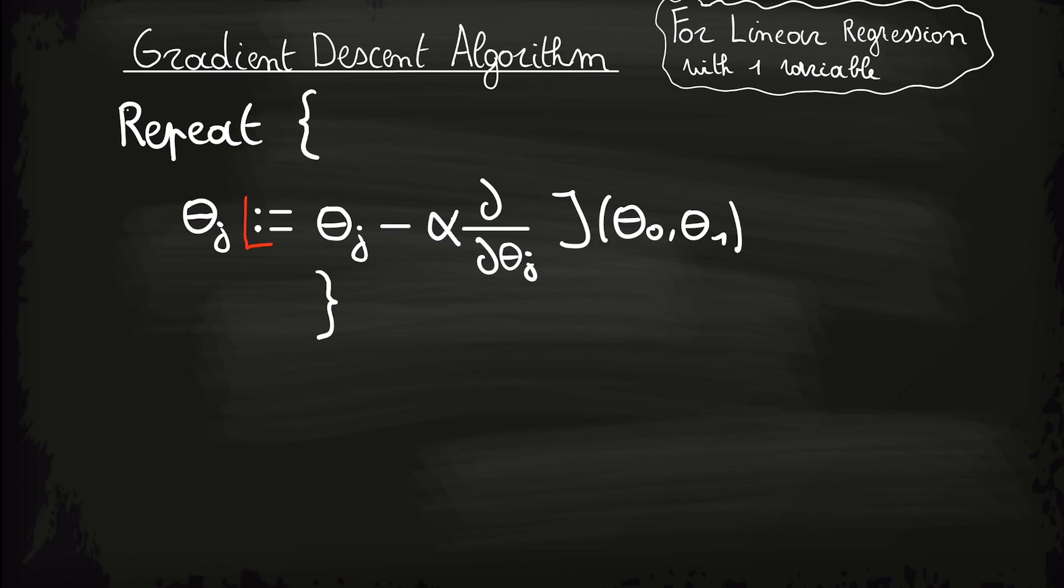We'll start with this notation. You might be wondering why we use this notation and not just an equal sign. This is done to be mathematically correct. For example, if you are familiar with programming, you don't have any problems with the expression x is equal to x plus 1. You know that x plus 1 will be put in the variable x or in other words, we made an increment to the value of x.